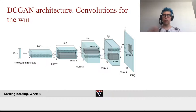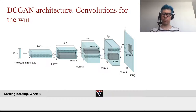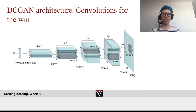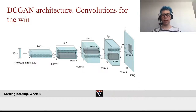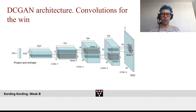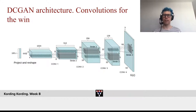Why? Convolutions mean that we have much fewer parameters. Much fewer parameters means that things will work much better in general in deep learning. Maybe the overarching principle, or one of the overarching principles, is that fewer parameters is always hugely useful.